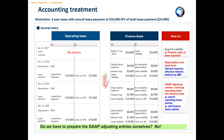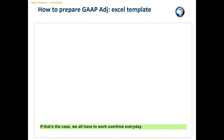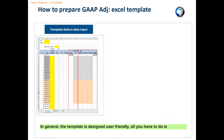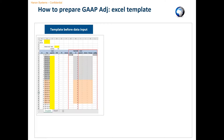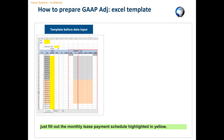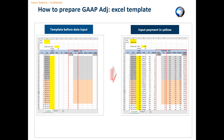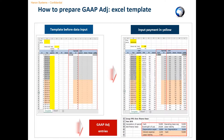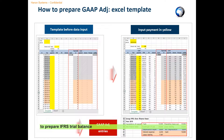Do we have to prepare the gap-adjusting entries ourselves? No. If that's the case, we all have to work overtime every day. Usually, all the global companies develop a group standard template and distribute it to local entities for gap-adjusting entries. In general, the template is designed to be user-friendly. All you have to do is just fill out the monthly lease payment schedule highlighted in yellow. And then, the template will automatically generate the gap-adjusting entries. You can simply copy the entries and add them to the local trial balance to prepare the IFRS trial balance.